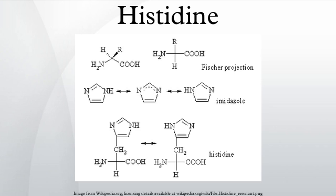Metabolism: the amino acid is a precursor for histamine and carnosine biosyntheses. The enzyme histidine ammonia-lyase converts histidine into ammonia and urocanic acid. A deficiency in this enzyme is present in the rare metabolic disorder histidinemia. In actinobacteria and filamentous fungi, such as Neurospora crassa, histidine can be converted into the antioxidant ergothioneine.